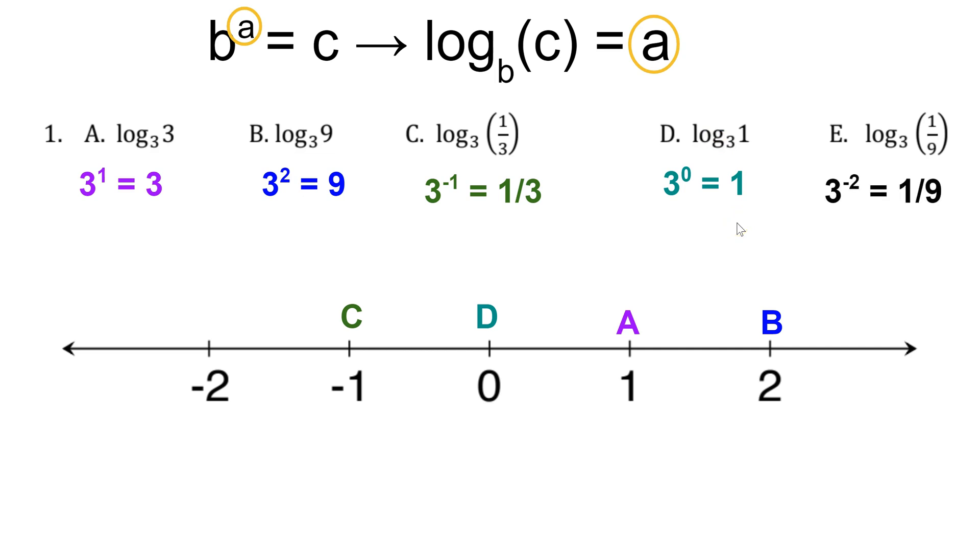Finally, for e, we know that 3 to the negative second power is 1 ninth. So e should be placed at negative 2.